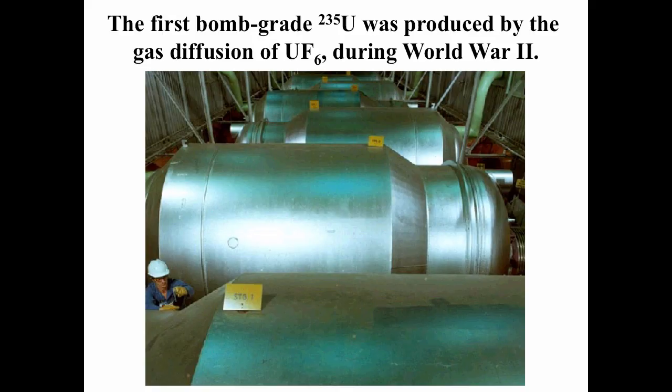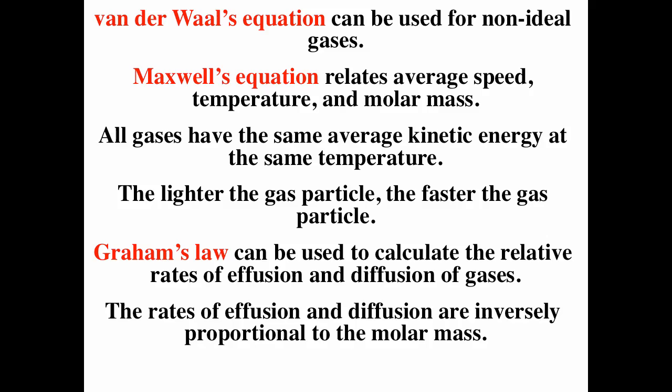The lighter the gas particle, the faster it moves. During World War II, the first bomb-grade uranium-235 was actually produced using gas diffusion of uranium hexafluoride. Uranium-235 is less than 1% naturally abundant and is the only naturally occurring fissionable material. For a nuclear bomb you need at least 90% uranium-235. So they made uranium hexafluoride, did gas diffusion, and the lighter gas particles go faster — that's how they separated uranium-235 from the other uranium isotopes. Currently, centrifuges are used for that.